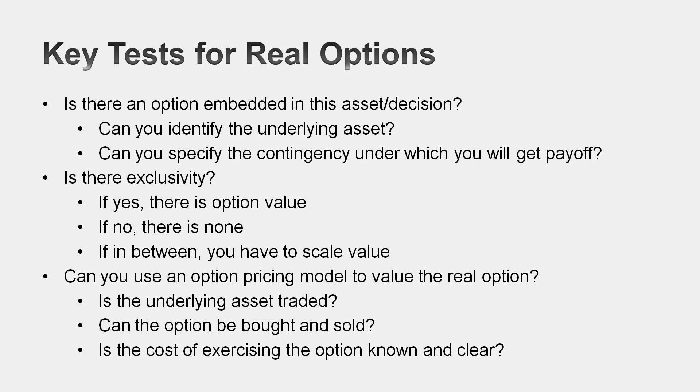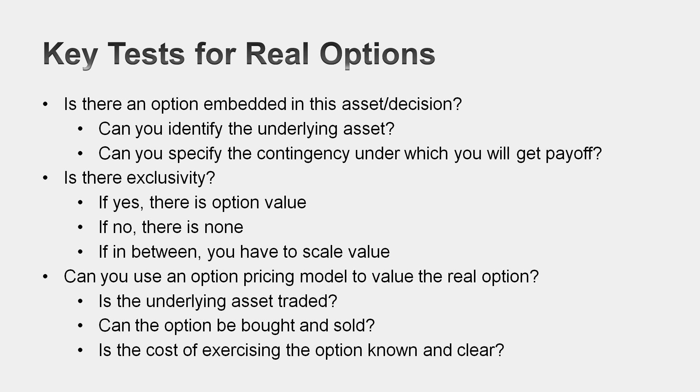Let me sum up. Options are a useful tool to have, but to apply them in valuation there are three basic tests you've got to meet. First, make sure there is an option embedded in an action. Second, check to see if you have exclusivity — if you do, you have significant option value. Third, check to see if you can trade on the underlying asset and the option, because only then can option pricing models deliver an accurate estimate of value. As we'll see, for every hundred options you run out there, maybe two or three will pass these tests — but when they do, it's an interesting and useful way to estimate value.